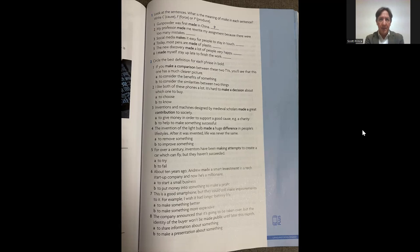Number six: About 10 years ago, Andrew made a small investment in a tech startup company. Now he's a millionaire. So that is B, to put money into something to make a profit. Number seven: This is a good smartphone, but they could still make improvements to it. For example, I wish it had longer battery. Make improvements. That would be A, to make something better. And number eight: The company announced that it's going to be taken over, but the identity of the buyer won't be made public until later this month. And that is A, to share information about something. Let's keep going.